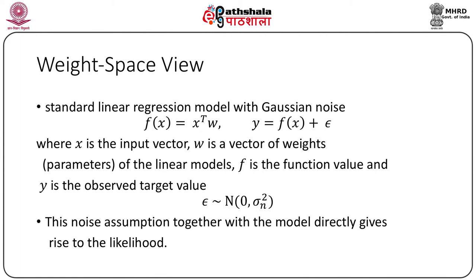In the weight space view, the standard linear regression model with Gaussian noise is described as f(x) = x^T ω, where y plays the role of f(x) plus some error term ε. Here x is the input vector, ω is the vector of weight parameters of the linear model, f is the function value, and y is the observed target value.